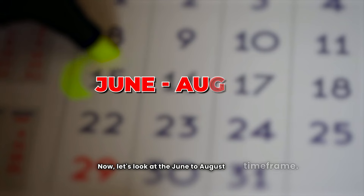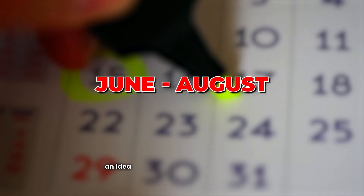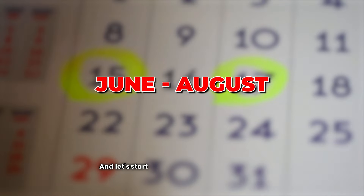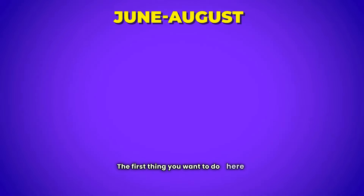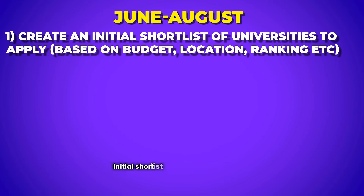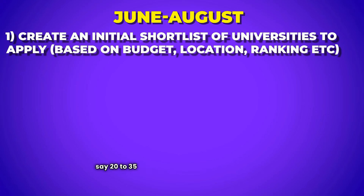Now let's look at the June to August time frame. This is when you want to start building a clear picture of where exactly you're applying and look at the application items. The first thing to do — and you can start this now — is create an initial shortlist of universities to apply to. Based on budget, location, and ranking, you should create an initial list of around 20 to 35 universities that seem appropriate for your profile and aspirations.